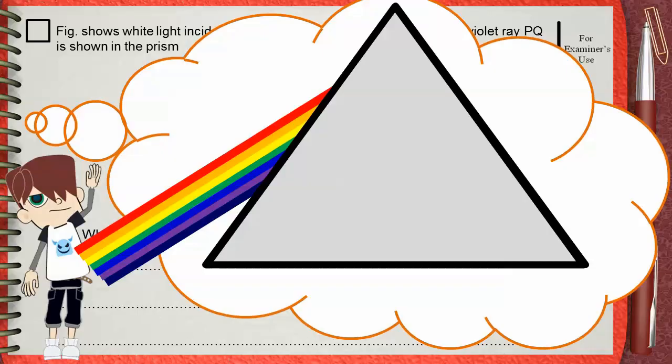They all have the same speed in air, 3×10⁸ meters per second. When white light goes into glass, or in other words, when the seven colors hit together the surface of glass, they change direction.